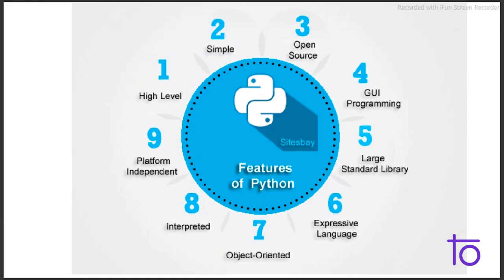Now coming to the features of Python which make it different from other programming languages. Python is a high-level language. A high-level language is any programming language that enables development of a program in a much more user-friendly programming context, making the language more user-friendly.